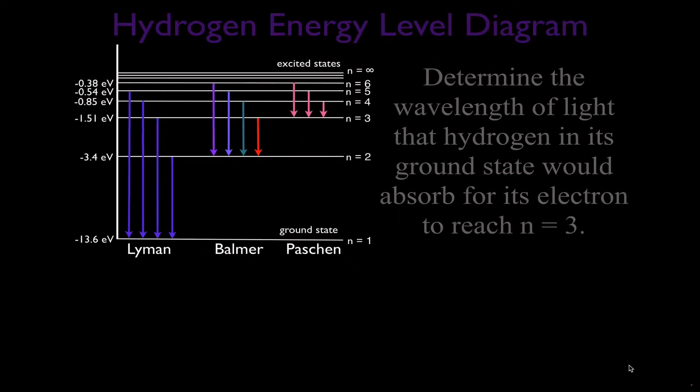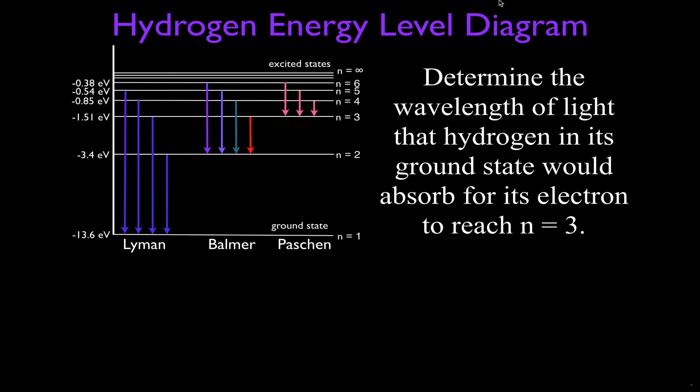And this is the problem we're going to be working on today. We have the hydrogen energy level diagram, and we're going to determine the wavelength of light that a hydrogen atom would have to absorb to move from the ground state to n=3. So that's the second excited state. The ground state is n=1, then we have n=2, and we have n=3.